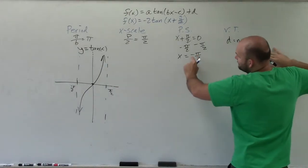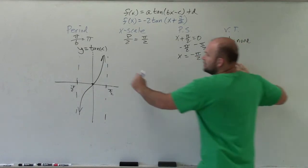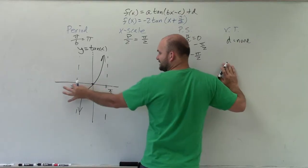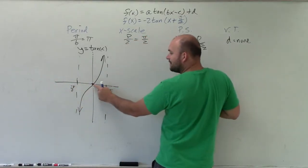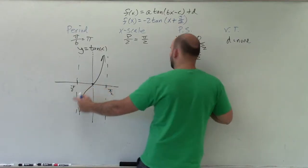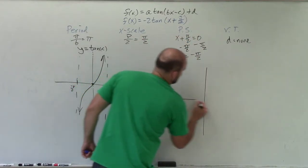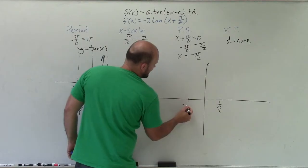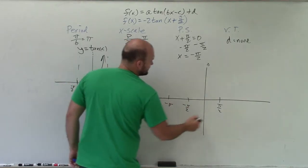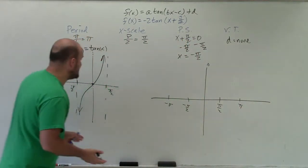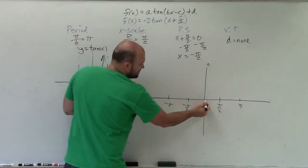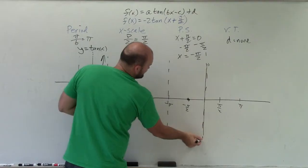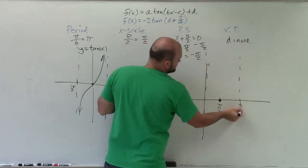Now, the phase shift says the graph is going to start at negative pi halves. So instead of starting at zero, we take this whole graph and shift it over by negative pi halves. Rather than the intercept being at the origin, the intercept is now at negative pi halves. So we have zero, pi halves, negative pi halves, negative pi, and positive pi marked. Since we shifted left, my x-intercept is now here, which means those become my asymptotes. Here is my next x-intercept, and there is my asymptote as well.